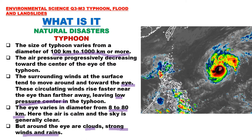In the satellite image, the very center is the eye of the typhoon — an area of calm and generally clear sky. Surrounding the eye, there are clouds, strong winds, and rain. When the typhoon passes over the Philippines, it brings these: clouds, strong winds, and rain.